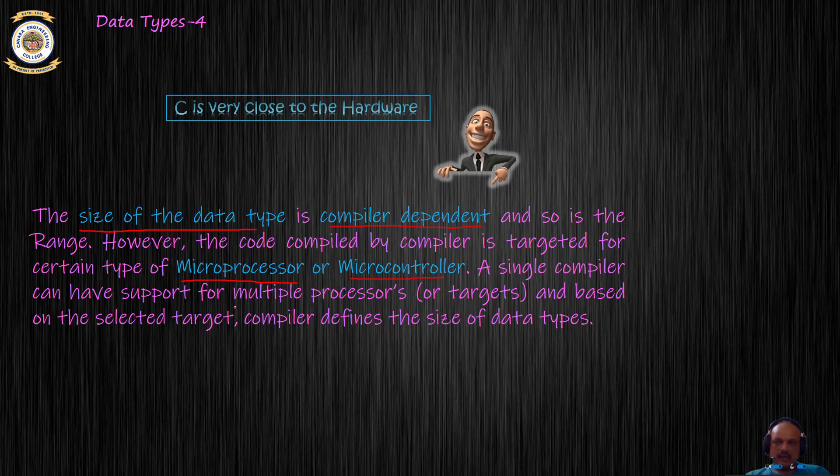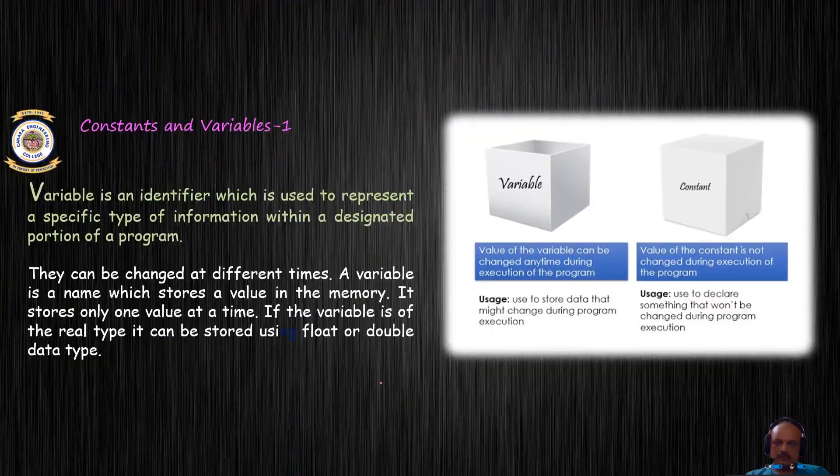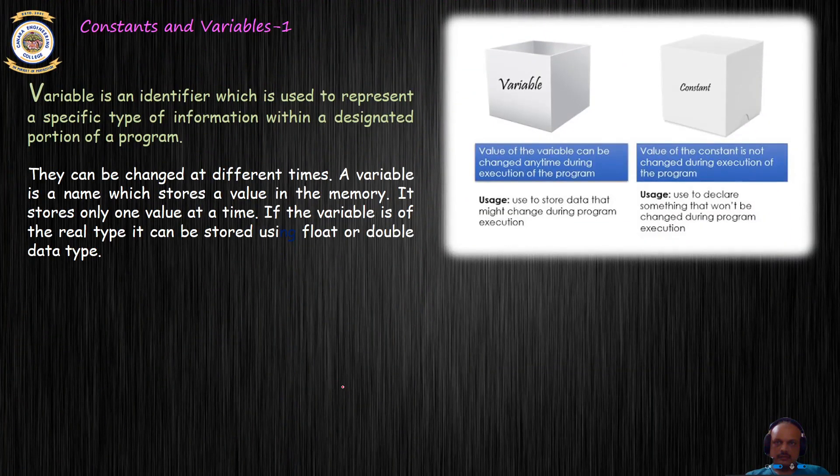So the C compiler basically determines the number of bytes allotted for a data type depending on the target or the target hardware that you are planning to run this code on. Having said data types, data types are associated with variables and constants. So what are variables and constants?